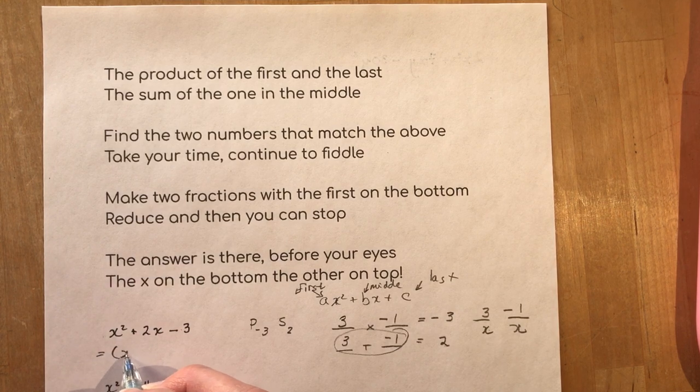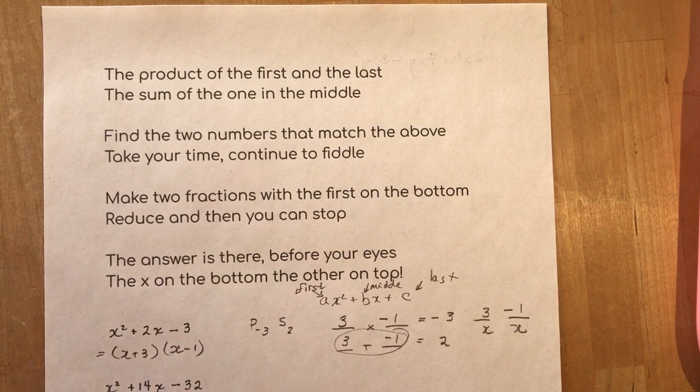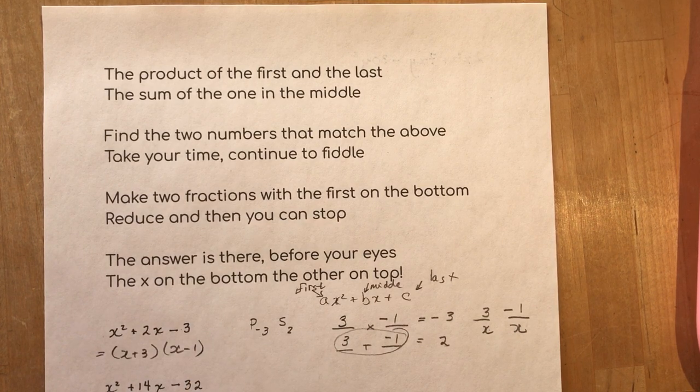Don't forget your equal sign. x plus three times x minus one. Okay these are what we call simple trinomials because the coefficient of x squared is one.